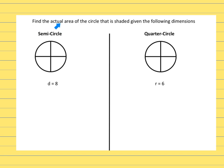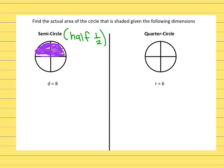We have two questions on this slide. We need to find the actual area of the shaded region. The first one on the left says semicircle, so I'm going to shade in half of the circle to represent the amount we need to find. For a semicircle, the area formula is radius times radius times pi, and because it's only half of the circle, we divide by two.